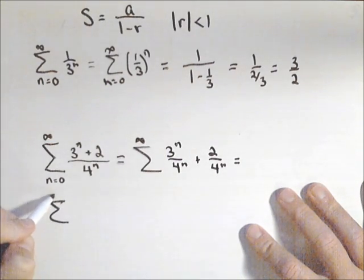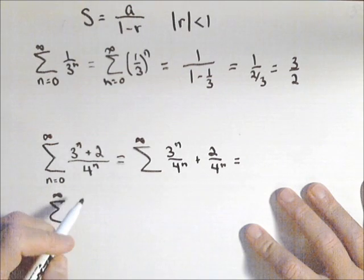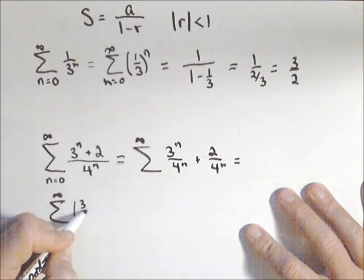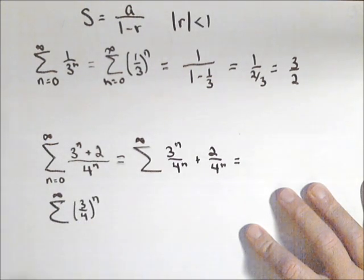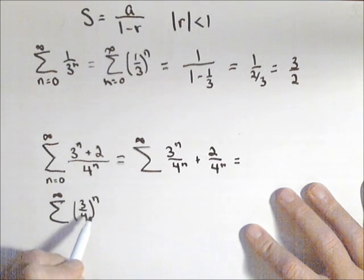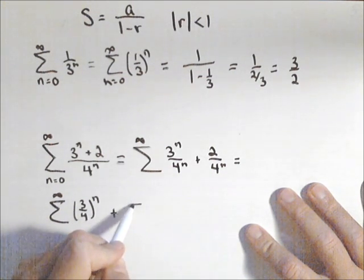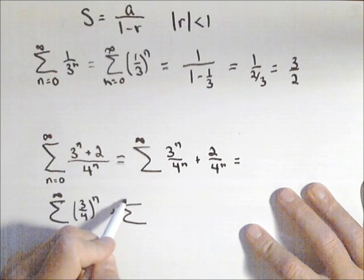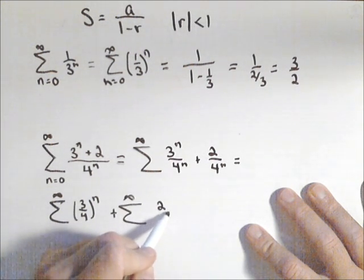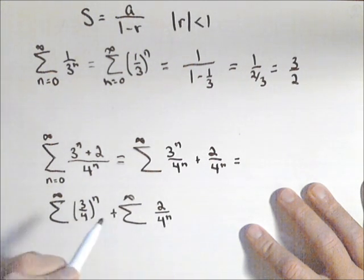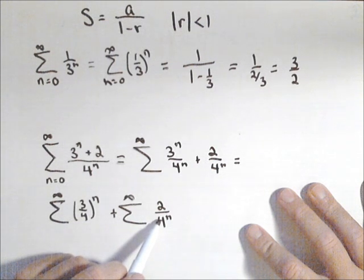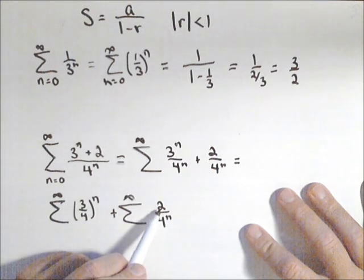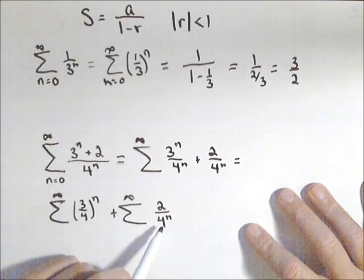And now I can split those into two separate summations. So the first one is going to be 3 to the n over 4 to the n which I can rewrite as 3 fourths to the n. That's definitely geometric with a common ratio less than 1 plus infinite sum of 2 over 4 to the n. This is also geometric.